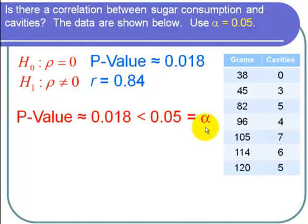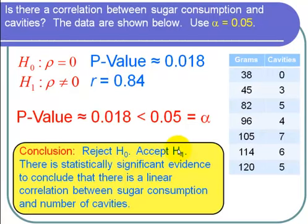The conclusion when the p-value is less than alpha is that we reject the null hypothesis and accept the alternative hypothesis. I can conclude that there is statistically significant evidence to conclude that there is a linear correlation between sugar consumption and number of cavities.